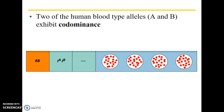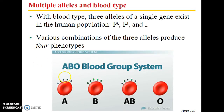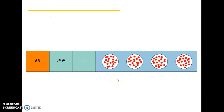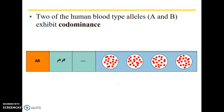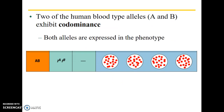Another concept that comes out of this example is codominance. The fact that you can have both A-type and B-type antigens together in type AB is an example of codominance, where both alleles are equally expressed in the phenotype.